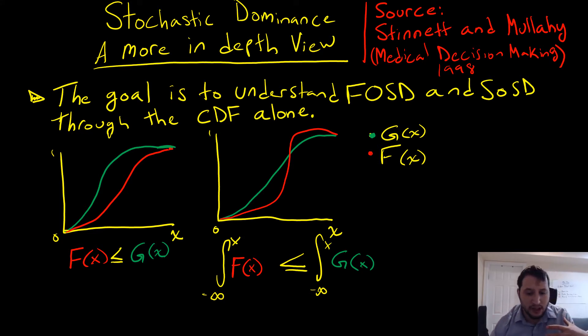First, looking at first order stochastic dominance, we're going to call that FOSD. We see that outcomes under G(x) are more likely than F(x) for any arbitrary outcome. What that means is that we're going to be systematically drawing higher outcomes from F compared to G(x).